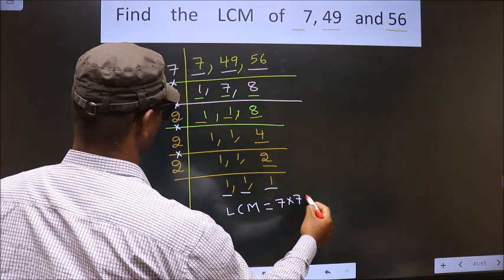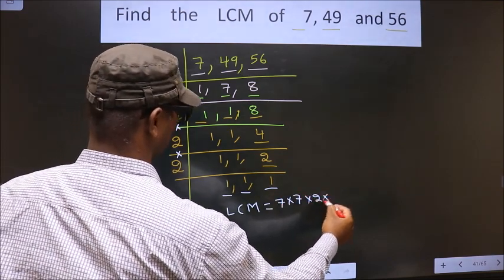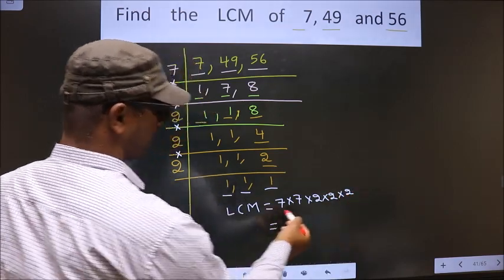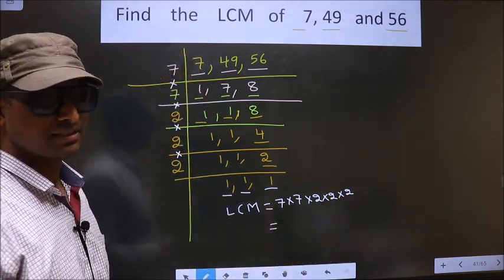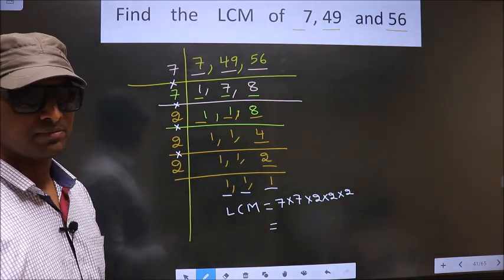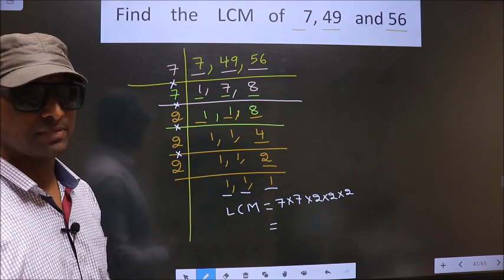7 into 7 into 2 into 2 into 2. You multiply all these numbers. Whatever number you get, that is your LCM. So let us multiply.